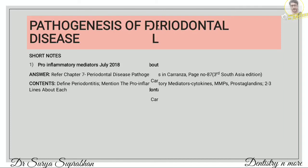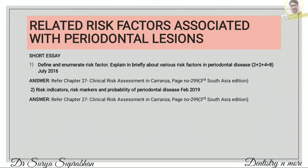Moving on to the next chapter — risk factors. Define and enumerate risk factors, and explain briefly about various risk factors in periodontal disease. For this, refer chapter 27, clinical risk assessment. You have to write what is a risk factor and enumerate them: first is tobacco or smoking, second is diabetes, third is pathogenic bacteria, fourth is microbial deposits. Write at least 3 to 4 lines about each, since this is a short essay.